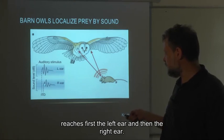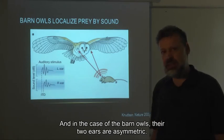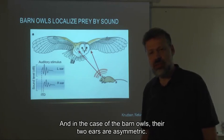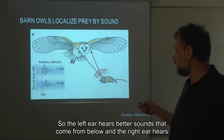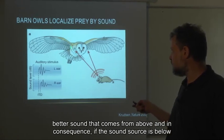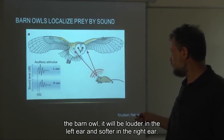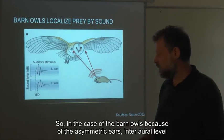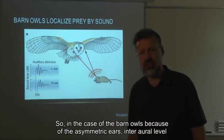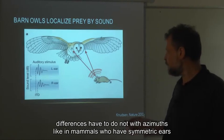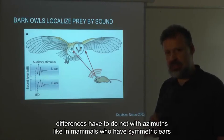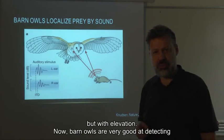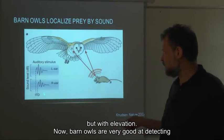So it reaches first the left ear and then the right ear. In the case of the barn owl, the two ears are asymmetric. The left ear hears better sounds that come from below, and the right ear hears better sounds that come from above. In consequence, if the sound source is below the barn owl, it will be louder in the left ear and softer in the right ear. So for the barn owl, because of the asymmetric ears, inter-aural level differences have to do not with azimuth like in mammals who have symmetric ears, but with elevation.